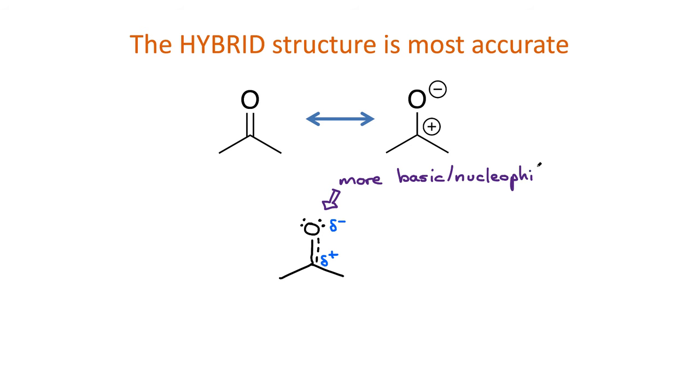These partial charges indicate that there's a shift in pi electron density toward the partially negative atoms. Those atoms are the most basic or nucleophilic. While atoms bearing a delta plus are more electrophilic.